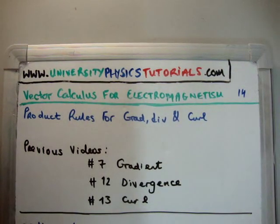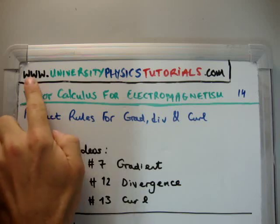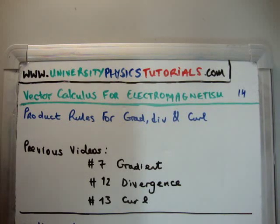In this video I'm going to continue on with my tutorials on vector calculus for electromagnetism. This is video number 14 and I'm going to discuss the product rules for gradient, divergence and curl. The previous videos which are relevant to this are number 7 where I discuss the gradient, number 12 where I discuss the divergence, and number 13 where I discuss the curl.